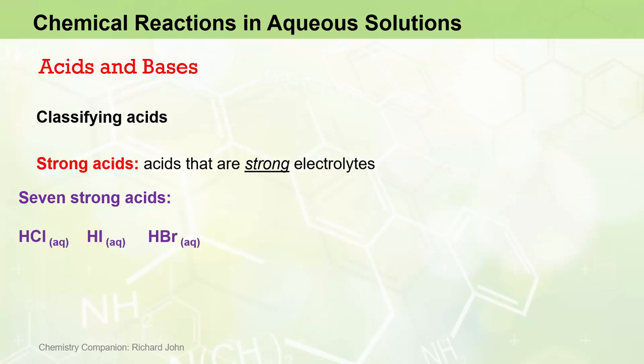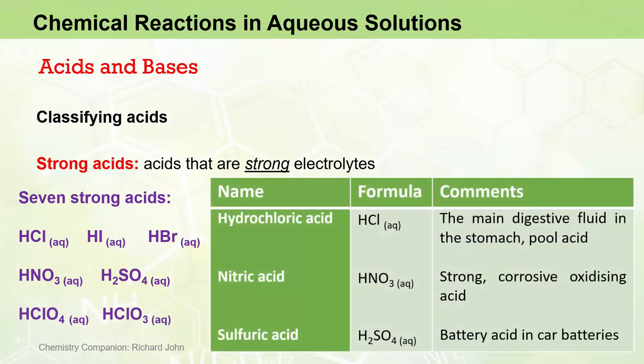Hydrochloric acid HCl, hydroiodic acid HI, hydrobromic acid HBr, nitric acid HNO3, sulfuric acid H2SO4, perchloric acid HClO4, and chloric acid HClO3. Here are perhaps the three most common strong acids and some of their uses. Hydrochloric acid, you may know, is the main digestive fluid in the human stomach, and is also the acid used to adjust the pH of swimming pools. Nitric acid is a very strong corrosive oxidizing acid that is used for dissolving metals and minerals to get metal ions in solution. And sulfuric acid is the acid that's used in car batteries.